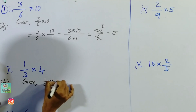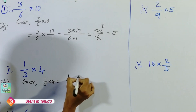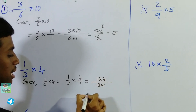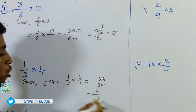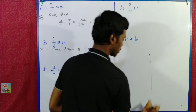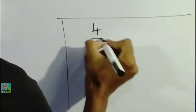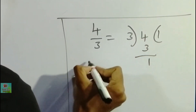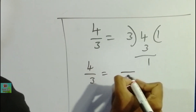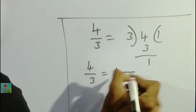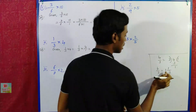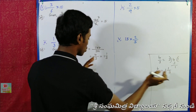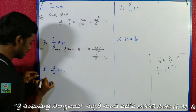Given: 1 by 3 into 4. So the next step — 4 is the quotient. 1 into 4 and 3 into 1, that is equal to 4 by 3. This 4 by 3 is a mixed fraction. If you have 4 by 3, 3 goes 1 time with remainder 1, so 4 by 3 is equal to 1 and 1 by 3.